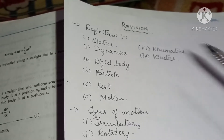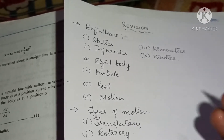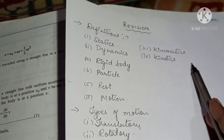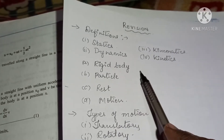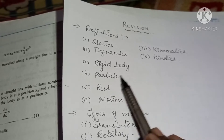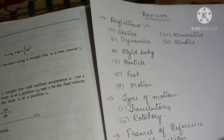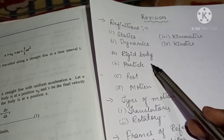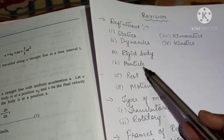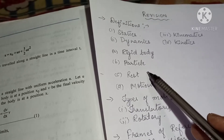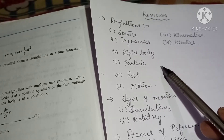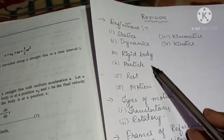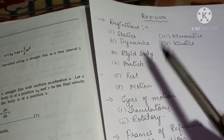A rigid body is a body which has a definite shape and size. A particle is a minute object where the dimensions of the object are negligibly small compared to the distance it travels.